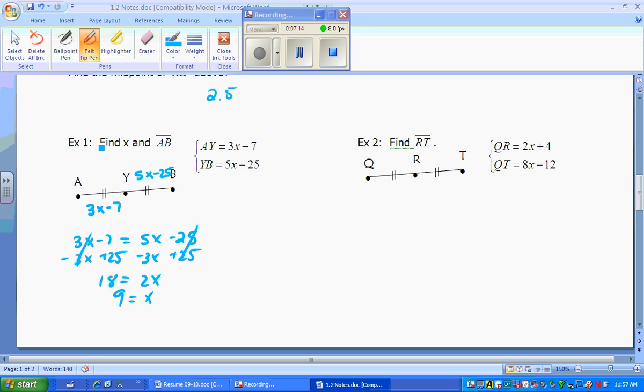Part of it is done. We want to find the length of AB. Well, finding the length of AB, you know that it's the whole thing. We can plug it back in and say, okay, 3 times 9 minus 7, well, that's 20, and if that's A, Y, Y, B has to be the same, so AB equals 40, and we're done with example 1.